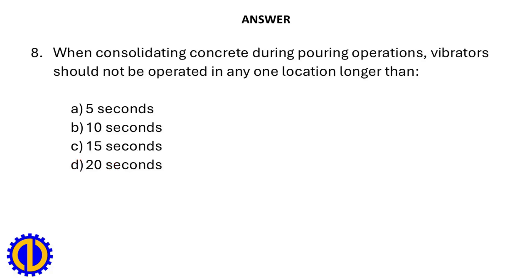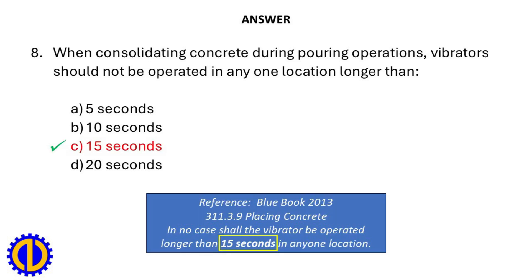When consolidating concrete during pouring operations, vibrators should not be operated in any one location longer than: a. 5 seconds, b. 10 seconds, c. 15 seconds, d. 20 seconds. Answer: c. 15 seconds. Reference: Blue Book 2013, Placing Concrete — in no case shall the vibrator be operated longer than 15 seconds in any one location.